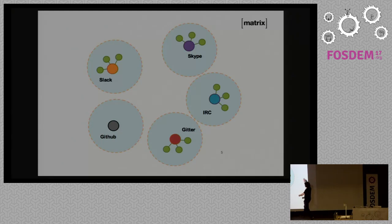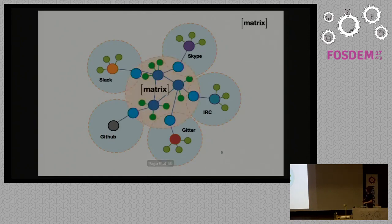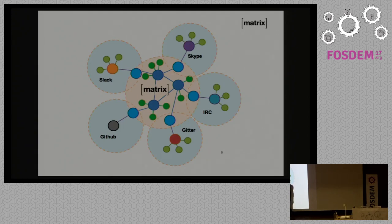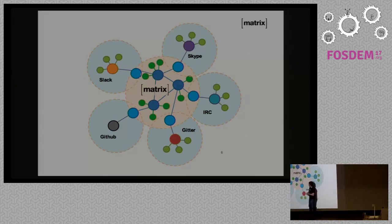In terms of the silos we're talking about, we have things like IRC, Gitter, and Slack. In the open source community we're very familiar with the fact that you have a perfectly good IRC channel that lasts for 20 years, then Slack comes along and half the people want to go to Slack, then half are on Telegram, then people start using Discord. The point of Matrix is to come in as the lowest common denominator fabric to connect them together via bridges.